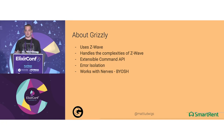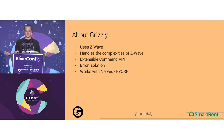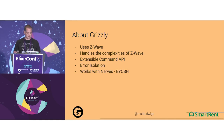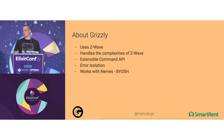Grizzly handles a lot of Z-Wave complexity. Z-Wave is a very large specification with many ins and outs and a lot of security involved. Grizzly automatically handles some of those security things out of the box. It has an extensible command API — if we don't support a command, we expose an Elixir behaviour so you can build your command, drop it in our library, and it'll run with it. It has error isolation — if you send a command to one device and it fails, nobody else will have issues. And it works with Nerves, so you can build your own smart home.